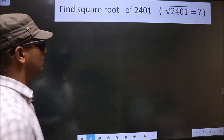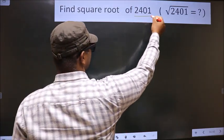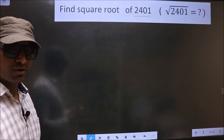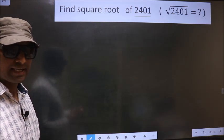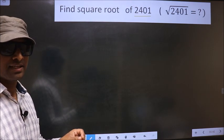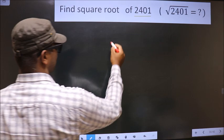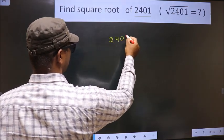Find square root of 2401. To find the square root by long division method, first we should frame it in this way: 2, 4, 0, 1.